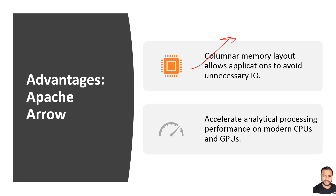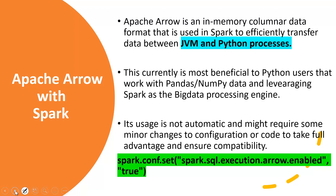Spark under the hood uses Apache Arrow to do data movements and to maintain common data formats when data shuffles between different processes. For example, on one hand you have a Spark Scala process, and on the other you may be using a Python process with Pandas or NumPy for data manipulation, and you want to bring that Python DataFrame into a Spark DataFrame. In such cases, the shifting of data between different processes is optimized using Apache Arrow, giving better memory footprints when data needs to be copied and converted across different heterogeneous processes and systems.